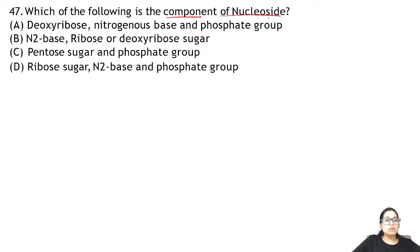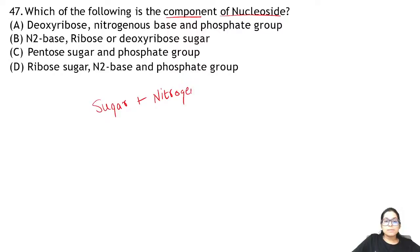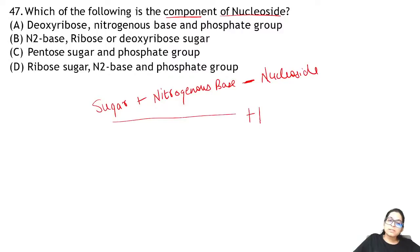Question 47: which of the following is a component of nucleoside? Nucleoside = sugar + nitrogenous base. If you add phosphate, it becomes a nucleotide: sugar + nitrogenous base + phosphate. So the answer for 47 is B.